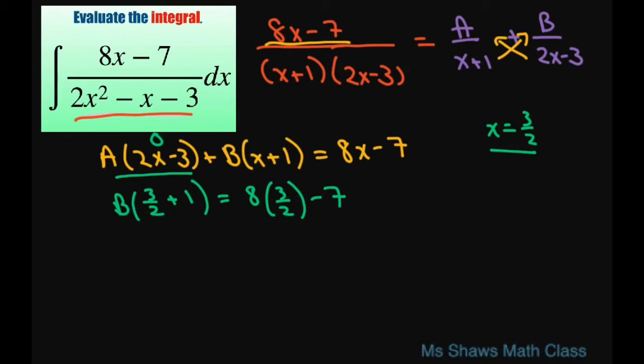So for the right-hand side, 2 goes into 8 four times, so this is 12 minus 7. On this side, I'm going to write it as 2 divided by 2, and that's going to give me 5 halves. So we have 5 halves B equals 5.